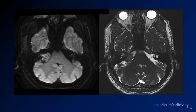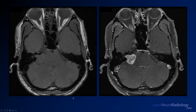Here you see the images. There is a mass in the right IAC — a pedunculated or mushroom-shaped mass coming out of the IAC. On T2 you can see it involving the IAC, with some expansion of the porous acousticus and a significant portion extending into the cerebellopontine angle. On the pre-contrast images it's very close to gray matter intensity so you don't see a lot, but on post contrast you see avid enhancement. It's pretty homogeneous but there are some areas of central low intensity, likely representing cystic degeneration or necrosis.